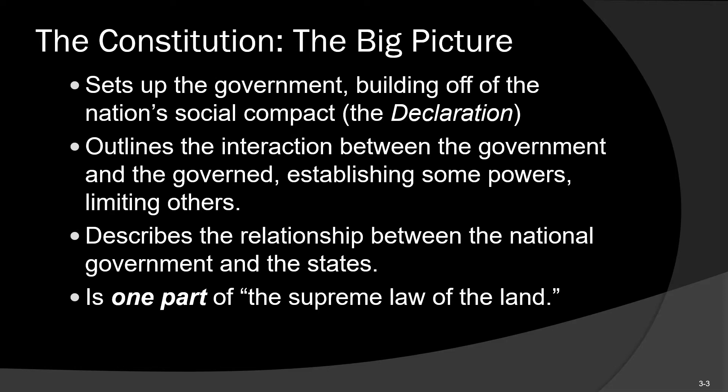For example, in the Constitution you'll find absolutely nothing mentioned about education, nothing about healthcare, and zero stated about the environment — and yet the federal government is involved in those areas to a great extent. Understanding how the federal government came to be involved in areas where it had no explicit authority is important as we look at our history. Up until around the 1950s and 1960s, education was solely the responsibility of states because the federal government had no constitutional authority over it.